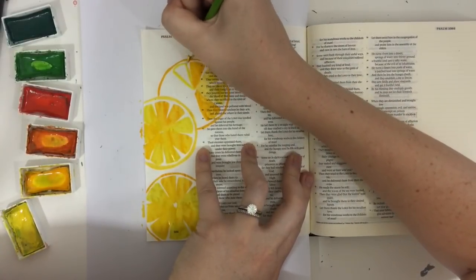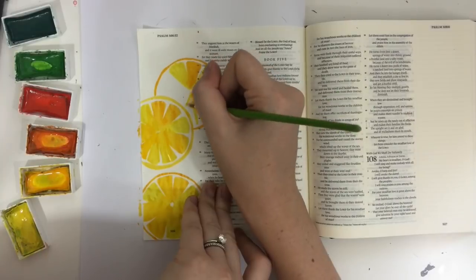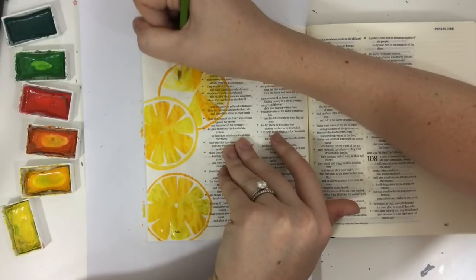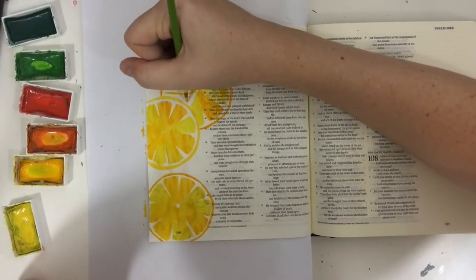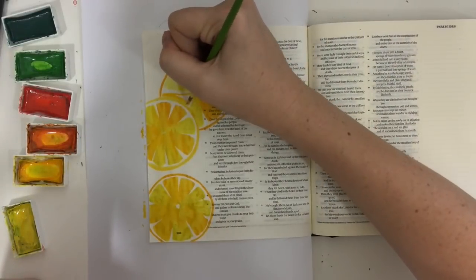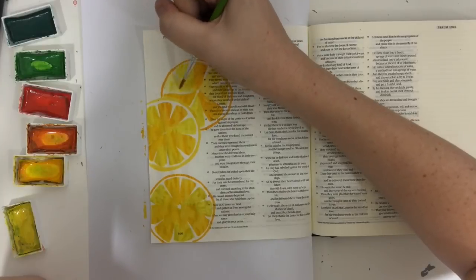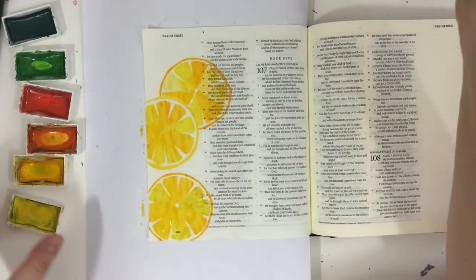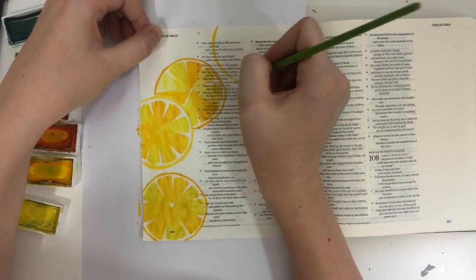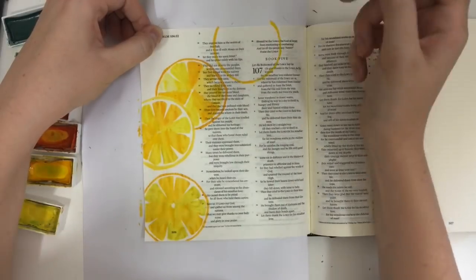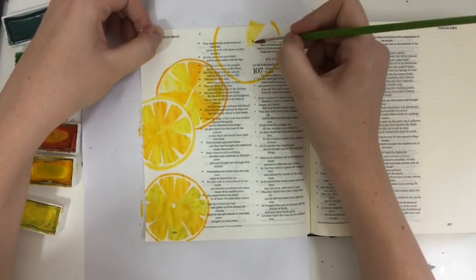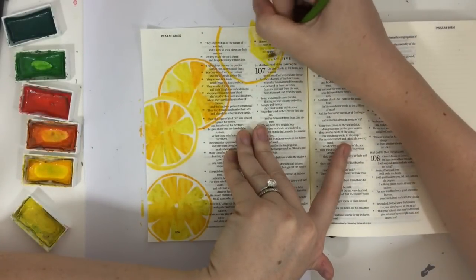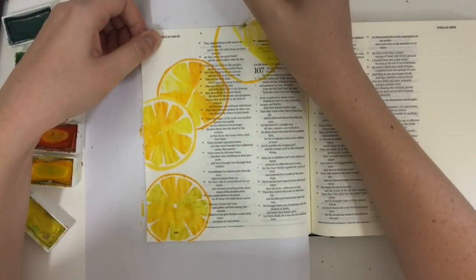Usually when I do watercolors I talk about changing up the saturation. So like using less water and more pigment or using more water and less pigment, and that'll create a variety of different tones as well. But for this I really just wanted to keep it simpler, and so I just did each wedge with full saturation. So just enough water to get a bunch of pigment on my brush and I just painted it on. So I wasn't too worried about the actual amount of saturation that I was using. I was more worried about the tones that I was using.